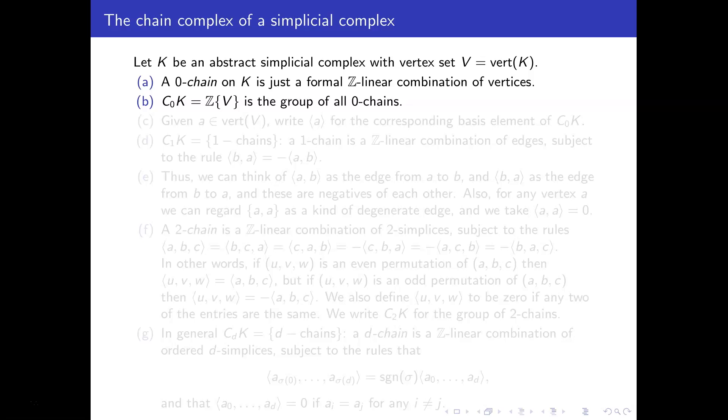So it's a group of all formal linear combinations of vertices. And remember we used the notation Z{V} for that. So we've got a vertex a, then I'm going to write this kind of pointy brackets ⟨a⟩ for the corresponding basis element of this group C_0(K) of a 0-chain.